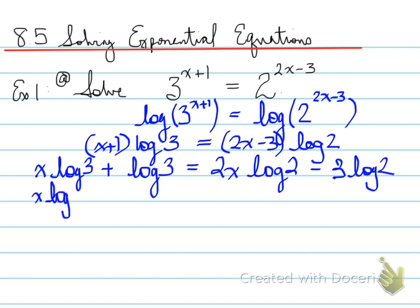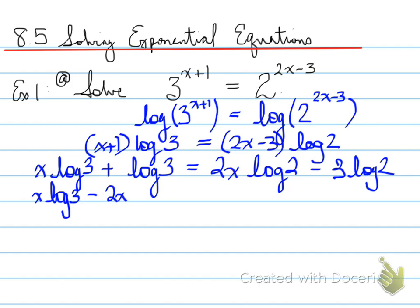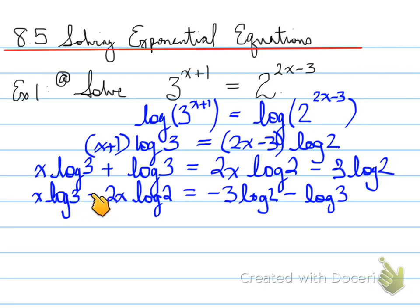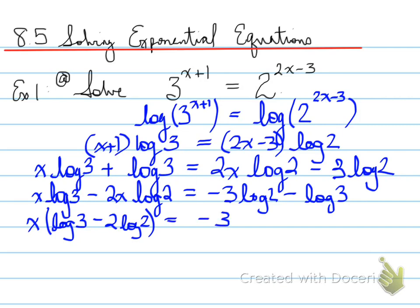Now we should be able to see how to combine things. We want to combine the x terms together and put the numbers on the other side. Taking all the x's together and the numbers on the other side, we can then common factor. We factor out x, giving us x times (log 3 minus 2·log 2) on one side.